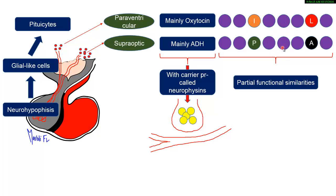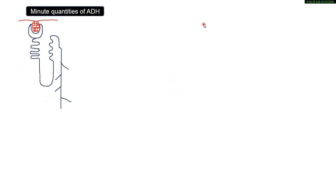This gives partial functional similarities between these two hormones, meaning oxytocin can somehow perform some functions of ADH, and ADH can somehow perform some functions of oxytocin.